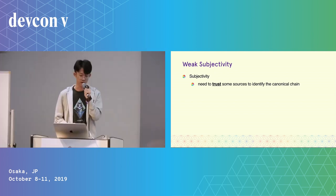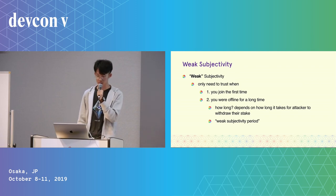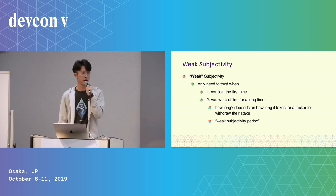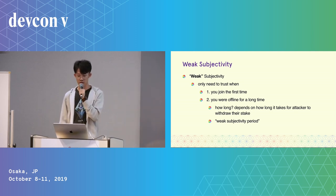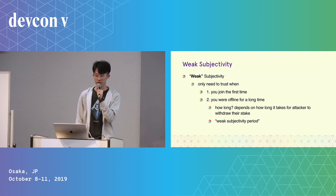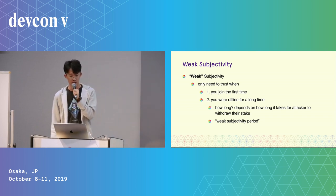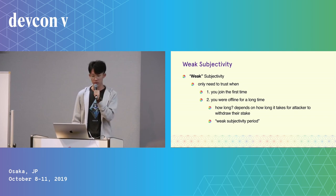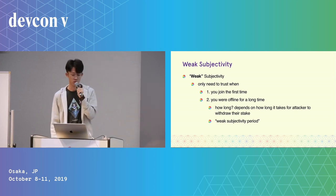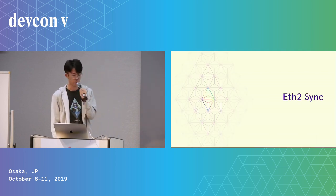So subjectivity in this context means that you need to trust some sources to identify the canonical chain. And why is it weak? It's weak because we only need to trust when first you join the network for the first time, or second, you were offline for a long time. How long? It depends on how long it takes for the attacker to withdraw their stake. And this is called the weak subjectivity period, which determines if we're going to need trust when we are syncing.